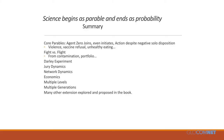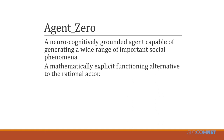Science begins as parable and ends as probability. The core parables for Agent Zero are that the creature is subject to emotion, bounded rationality, and social connection — joins, even initiates action despite negative solo disposition. Examples include financial behavior, violence, vaccine refusal, obesogenic eating, fight versus flight, jury dynamics, networks, and economics. Here is a neurocognitively grounded agent capable of generating a wide range of important social phenomena — a mathematically explicit, functioning alternative to the rational actor. Thank you.